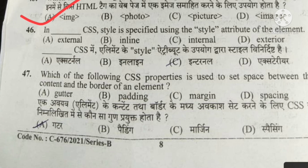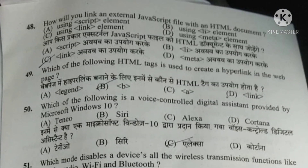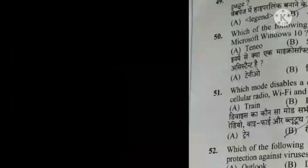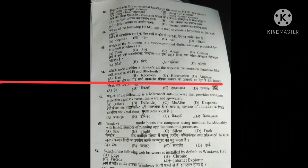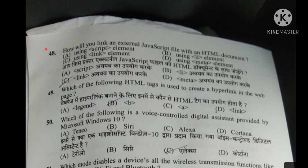In inline CSS, the style is specified using the style attribute of the element — B is the right option. Which CSS property is used to set space between the content and the border of an element? B — padding. How will you link an external JavaScript file with an HTML document? A is the right option. Which HTML tag is used to create a hyperlink in a webpage? C is the right option.